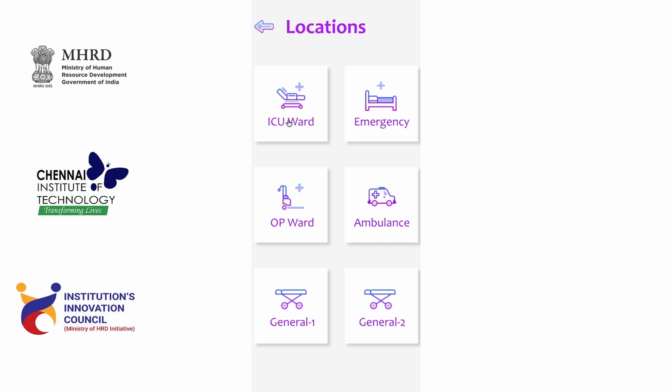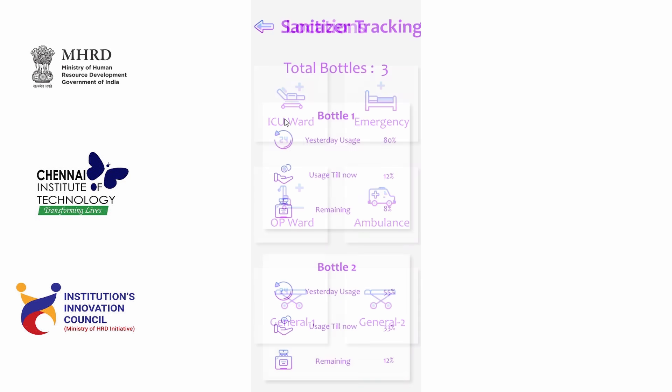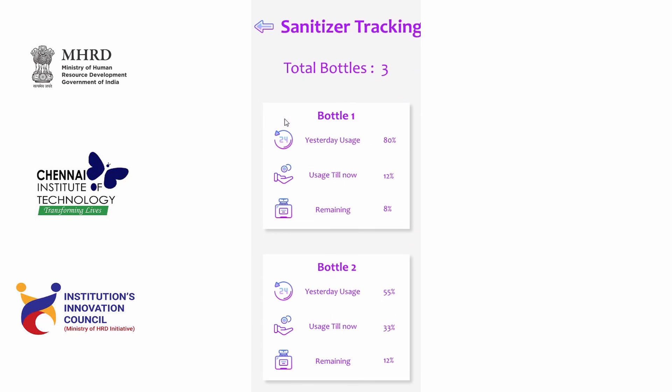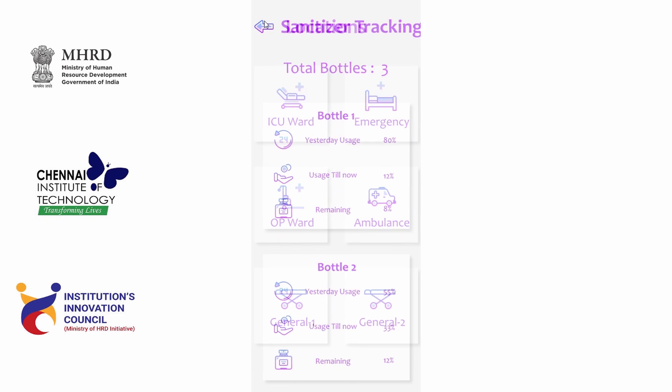If you click on a particular ward, it shows the number of dispensers placed along with the usage chart, which shows yesterday's usage, today's usage, and the amount of quantity available in the bottle.